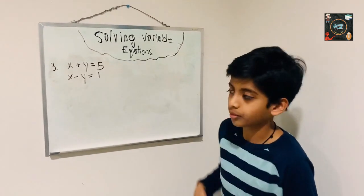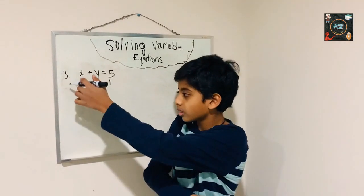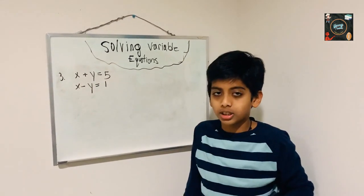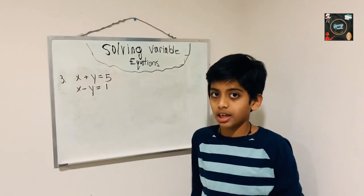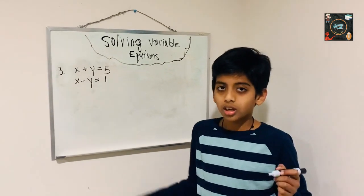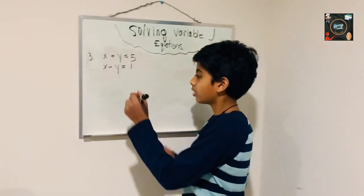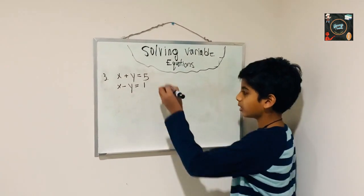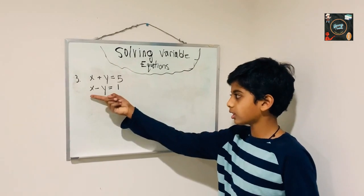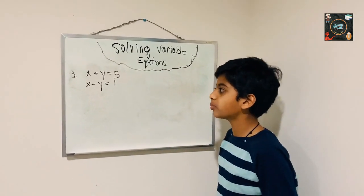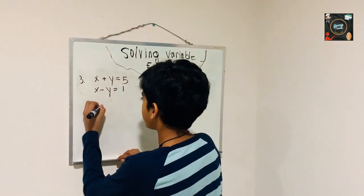These are the two different equations. The main goal is to find the value for both x and y. To start, we have to take one of the equations — I'm going to take the second equation, which is x minus y equals 1, and I'll write that down.